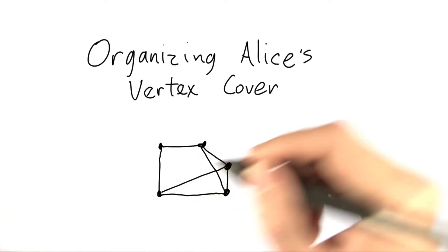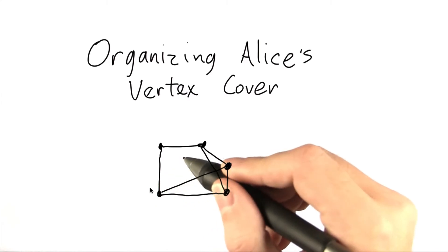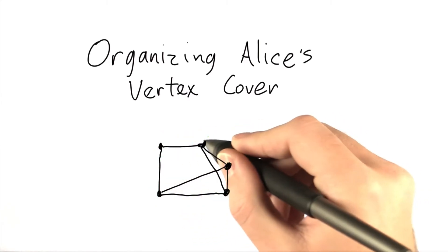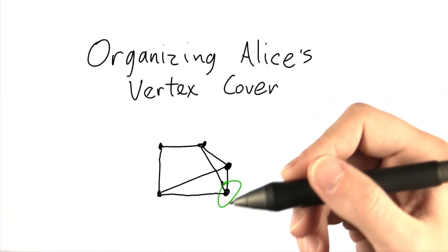Then we check every cover with one vertex in it. So let's say this one. Then we check this one. Then this one. And so on. And after we're done with that,